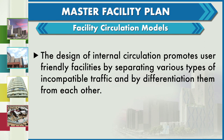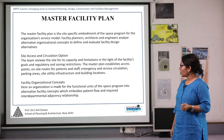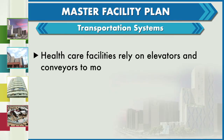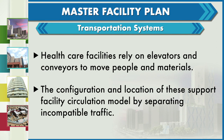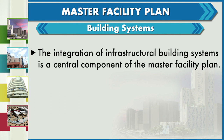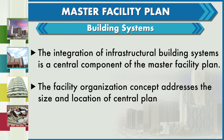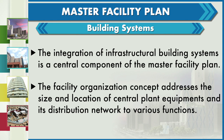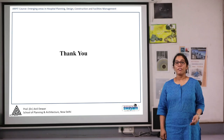Next is transportation systems. In a healthcare facility, we have elevators and conveyors for movement of patients, visitors, instruments, and equipment. Proper facility management configures and locates these accordingly so they do not hinder people movement. Building system is the next component — it is the integration of infrastructure and building system, and the central component of a master facility plan. This includes the location of a central plant, and how, for example, an HVAC plant will be distributed to various segments of the building, ensuring all systems work as required. We have come to the end of this session — I hope it was clear. Thank you.